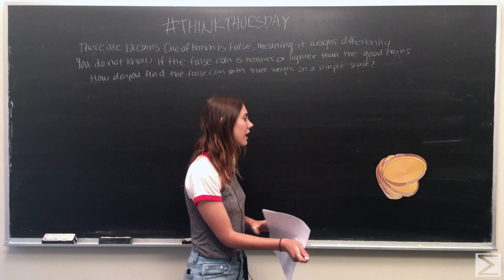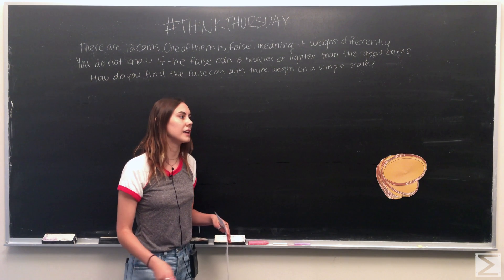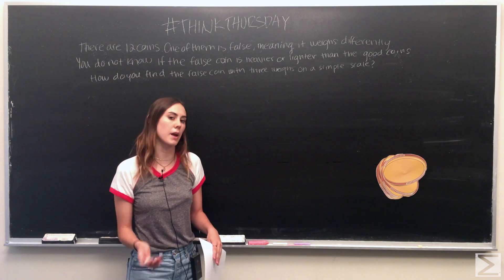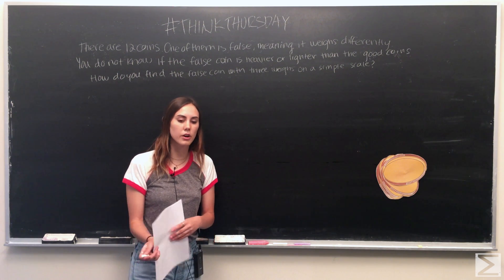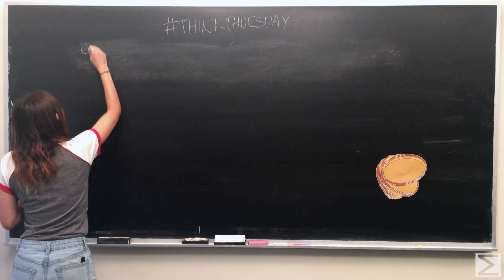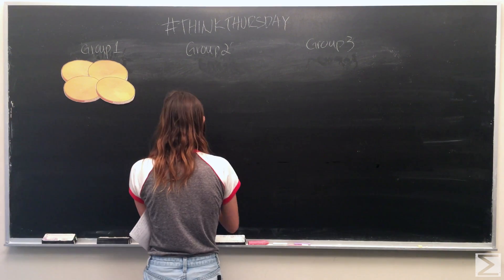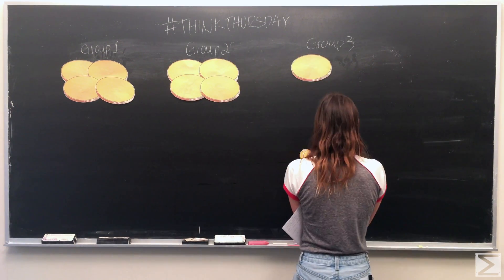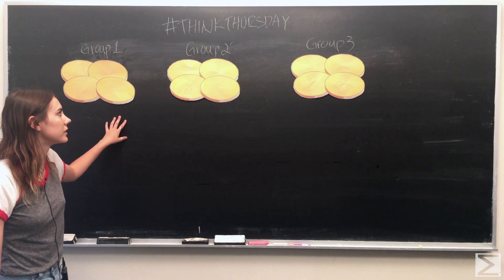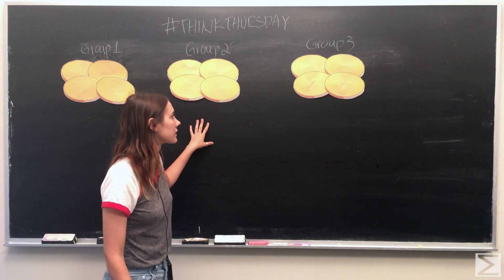So again, we have 12 coins here, and what you want to do is actually create groups from the 12. You want to create groups that aren't too large, like two groups of six, but somewhere in the middle so that when you compare the different groups, you're able to weigh different coins against each other. So we're going to begin by making three groups of four. Now that we have three groups of four coins — 12 in total — we're going to weigh group two and group three against each other.